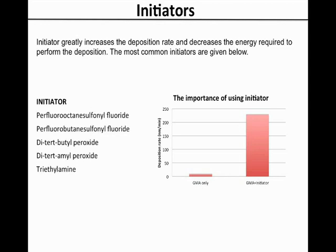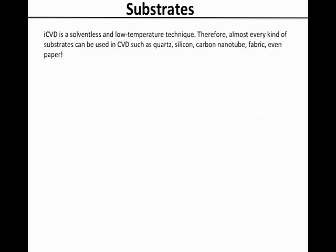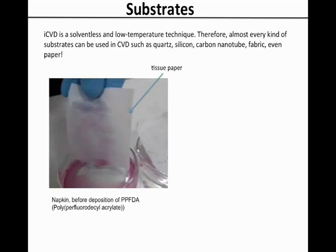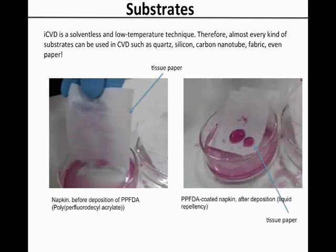iCVD is a solventless and low temperature technique. Therefore, almost every kind of substrate can be used, such as quartz, silicon, carbon nanotubes, fabric, and even paper. In this slide we can see the effect of a very thin fluoropolymer coating on tissue paper. After only a few nanometres of coating by iCVD, the hydrophilic paper becomes highly water repellent.